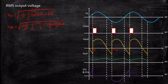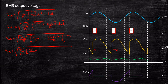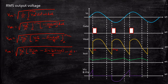Applying the integral, we get: Vout_RMS = √[(Vm²/π) × [ωt/2 − sin(2ωt)/4] from alpha to pi plus alpha]. Substituting the upper limit (π + α): (π + α)/2 − sin(2π + 2α)/4. Using the identity sin(2π + θ) = sin(θ), sin(2π + 2α) = sin(2α). So the sin(2α)/4 terms from upper and lower limits cancel, and the (π + α)/2 and α/2 terms simplify.